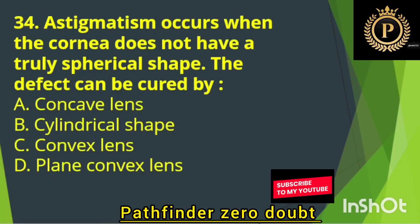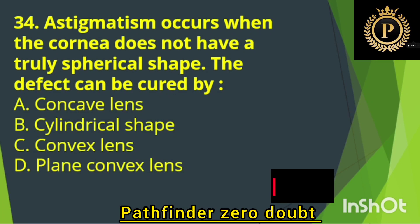Astigmatism occurs when the cornea does not have a truly spherical shape. The defect can be cured by — Option B: A cylindrical lens.